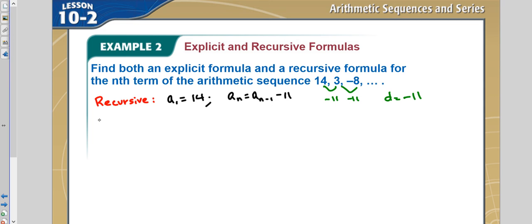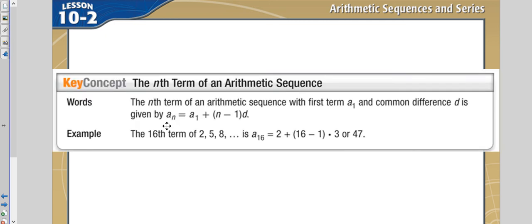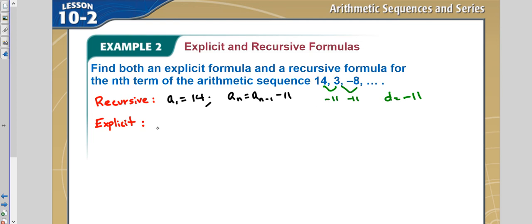Now to find your explicit formula, you use that formula we just got right here, where you would say a sub n would equal a sub 1. Now a sub 1 is what in this case? It's 14. So I'm not going to put a sub 1 there. You put 14. And then you add n minus 1 times the difference, which in this case is negative 11.